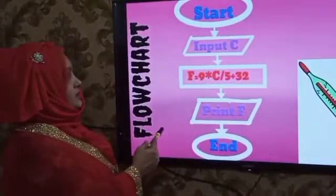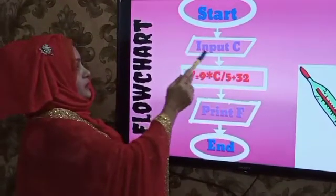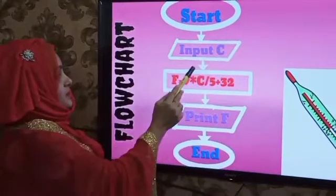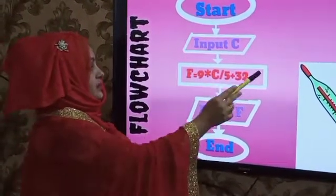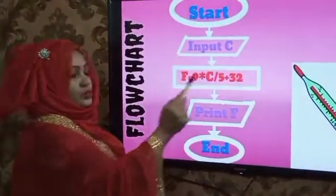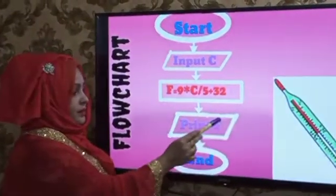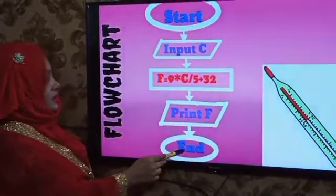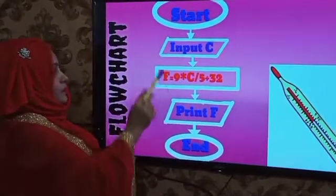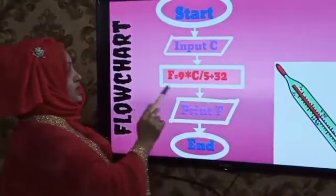This is the flowchart. First, this is an oval shape — Start. This is a parallelogram — input diagram, Input C. And this is the output parallelogram — Print F. Last one is End. Start and End both use oval shape. Input and Output both use parallelogram shape. And this rectangle is the processing formula box.